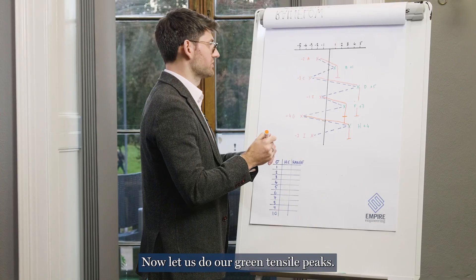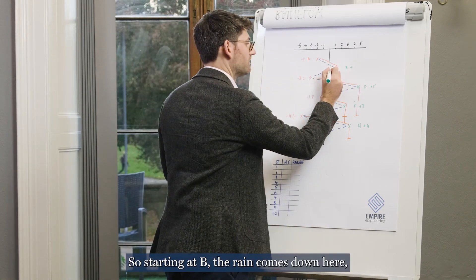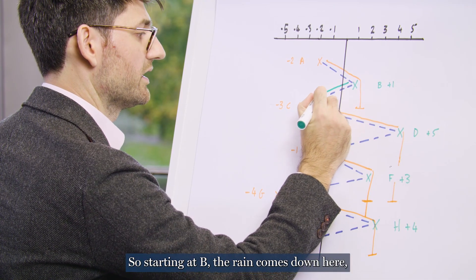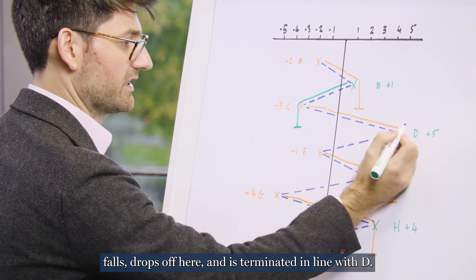Now let us do our green tensile peaks. So starting at B, the rain comes down here, falls, drops off here and is terminated in line with D.